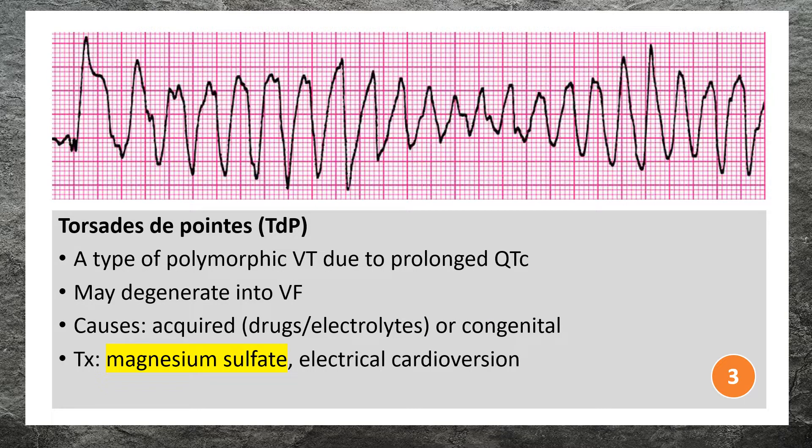Torsades de pointes is a specific type of polymorphic ventricular tachycardia associated with QTc prolongation, characterized by a gradual change in amplitude and twisting of the QRS complexes around the isoelectric line on the ECG. The rhythm may terminate spontaneously or may degenerate into ventricular fibrillation, which can be deadly.